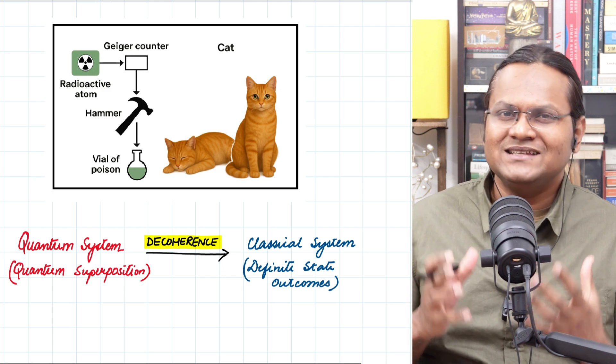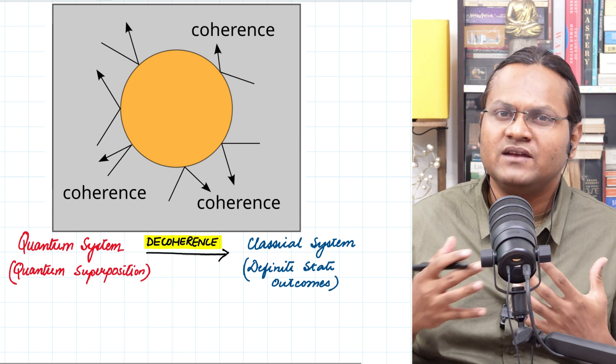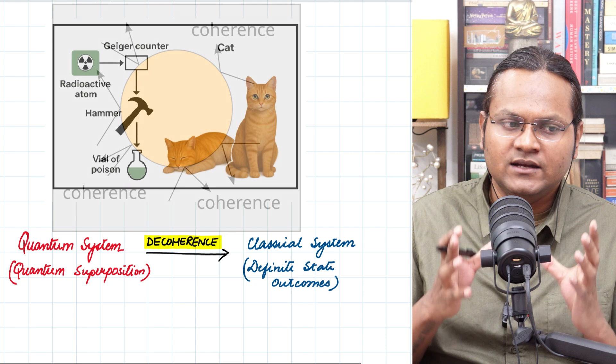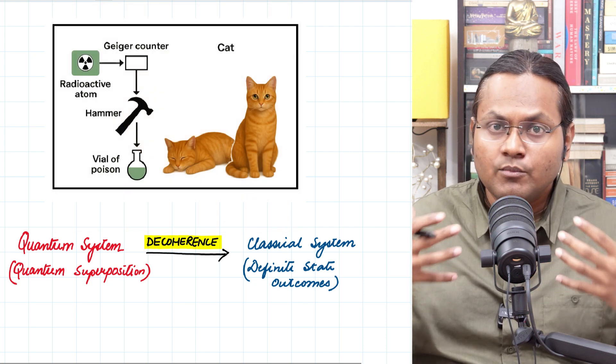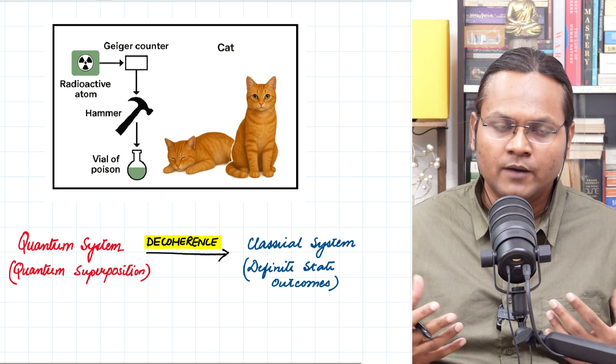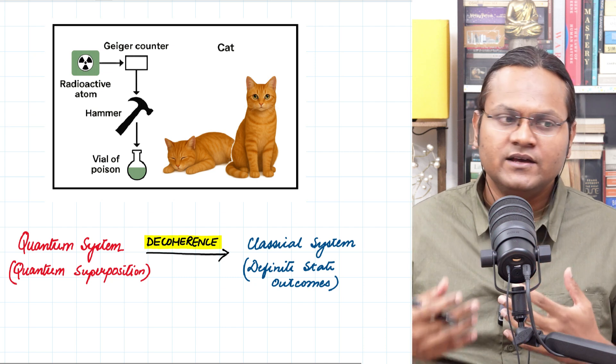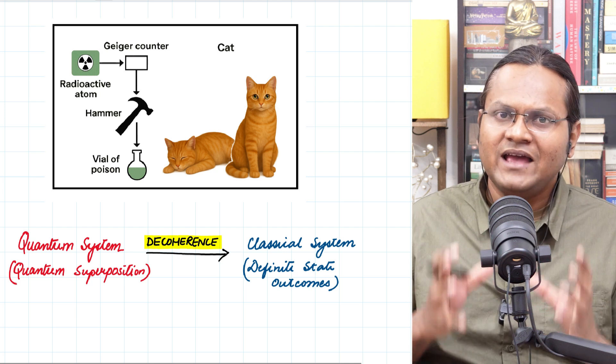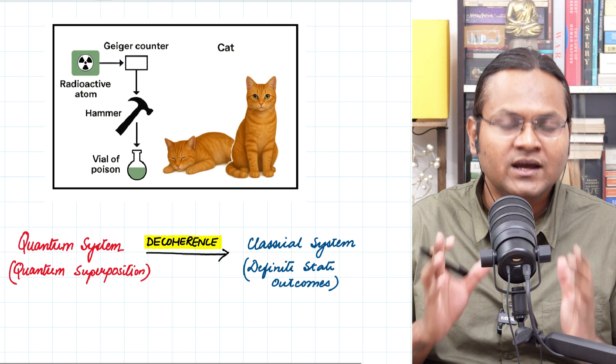Particles are always existing as part of an environment in which they are interacting. So for example, even if you have a cat in a box, the cat has a large number of molecules in his or her body. It releases thermal radiation. There is gas in the chamber. The molecules of the chamber gases are interacting with the body of the cat. There is temperature fluctuation. There is exchange of thermal energy. The body of the cat is constantly interacting with its environment. And it is in fact, not an isolated system.